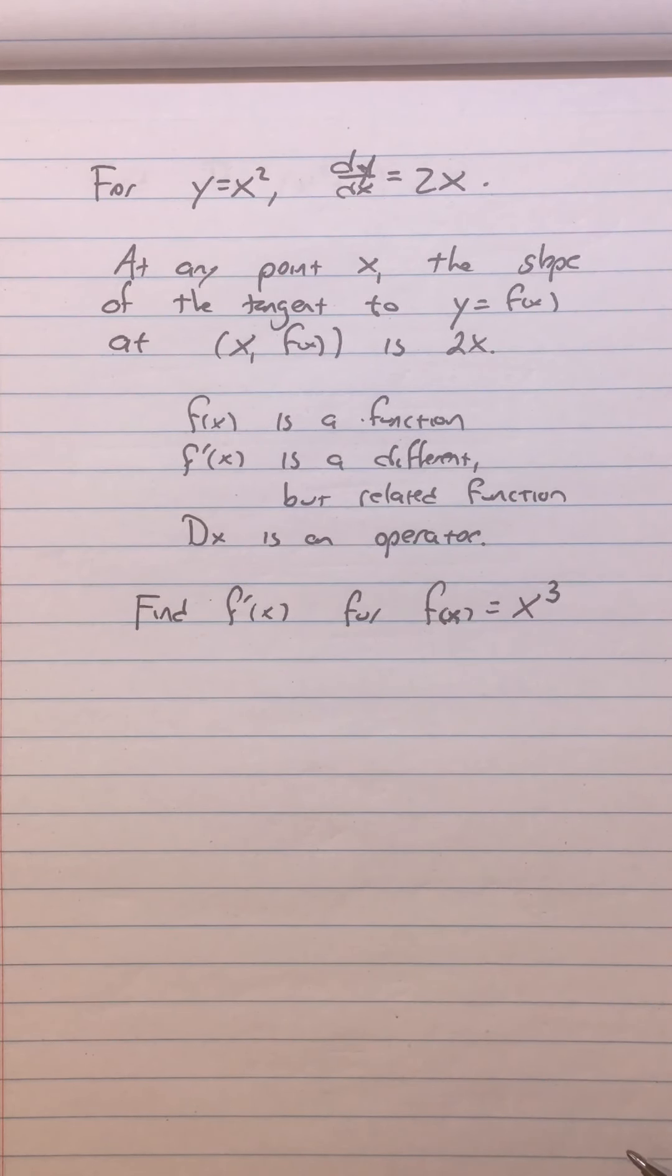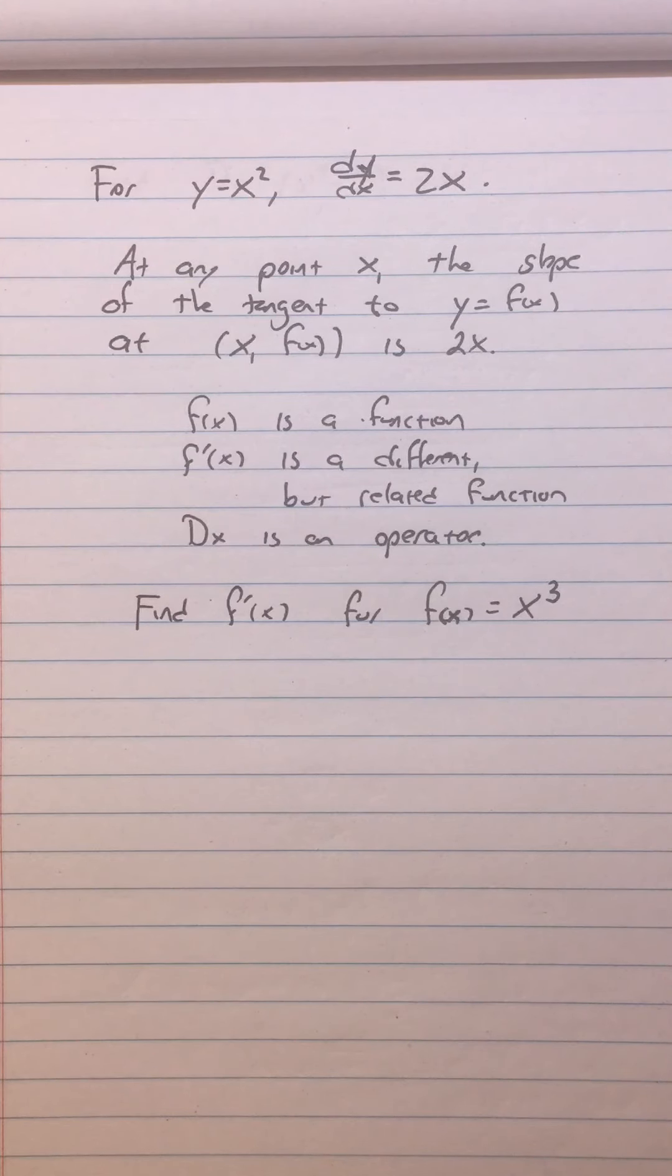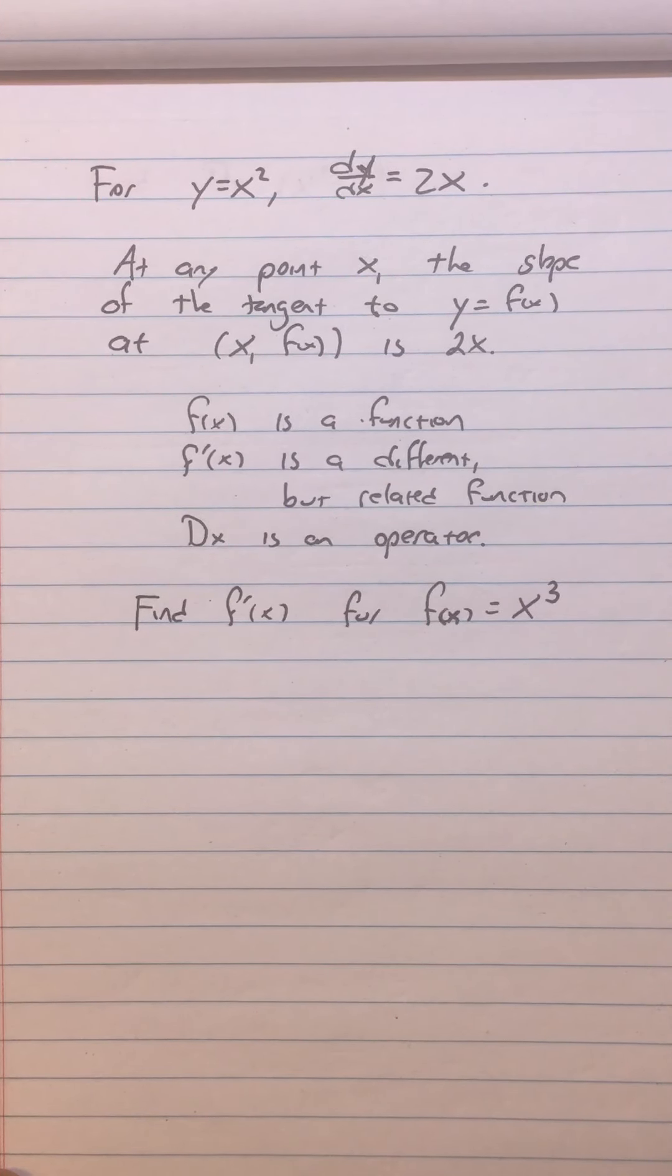And they have to say that using the limit definition, because we are soon going to get an immensely easier way to do this, where you're going to look at this x cubed, and you're going to say, oh, the derivative of that is 3x squared. You're going to say that in less than 3 seconds. So you will be able, but for now, we need to show where things come from.